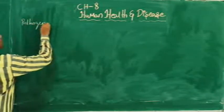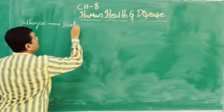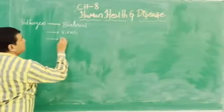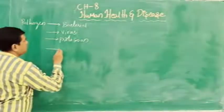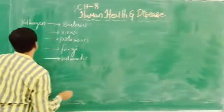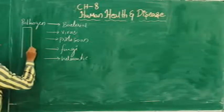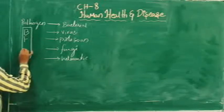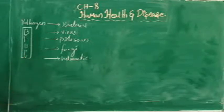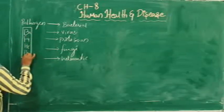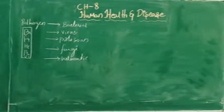Pathogens are generally bacterial, virus, protozoan, fungi, and helminthic. To remember the pathogens, you can use the mnemonic: B, V, H, P, F — Bacteria, Virus, Helminthic, Protozoa, Fungi. If you remember this, it will be useful for identifying pathogens.